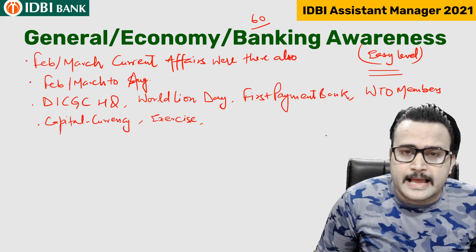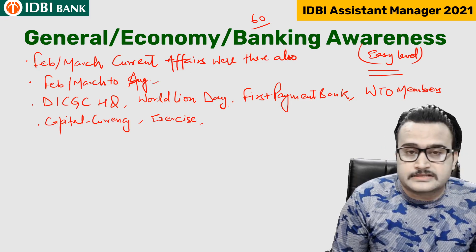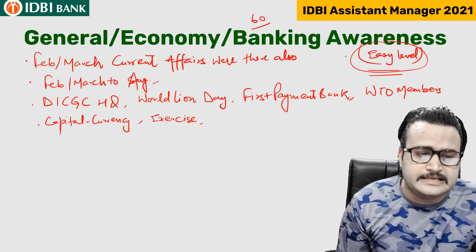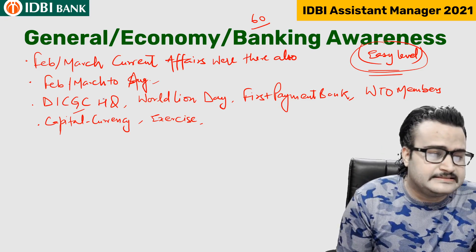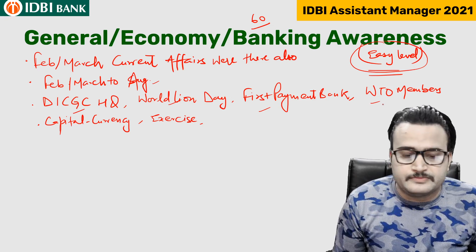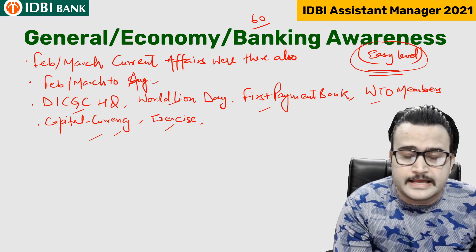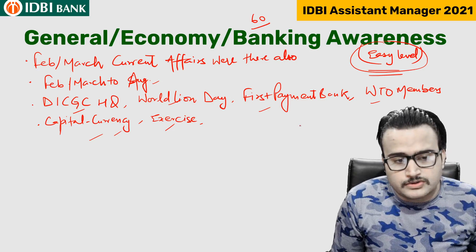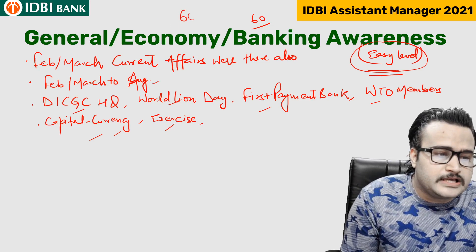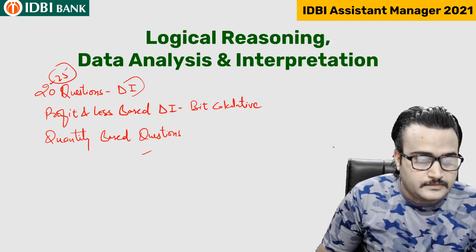General Economy and Banking Awareness was very easy. Current affairs from February to August were there. Topics included DICGC headquarters, World Land Day, World Payment Bank, first payment bank, WTO member countries, capital and currency questions, and excise-related questions. Students well-versed in current affairs and banking awareness could easily attempt 45 to 50 questions out of 60 with very good accuracy.